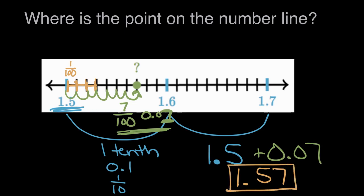Or 1.57. So our point, right here, is at 1.57. 1 and 5 tenths plus seven more hundredths gets us to 1 and 57 hundredths.